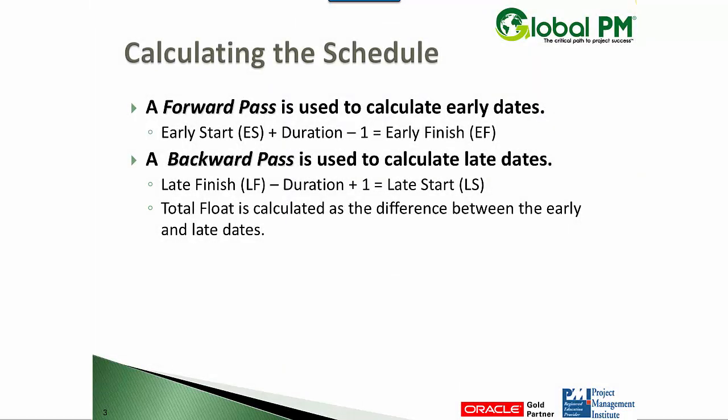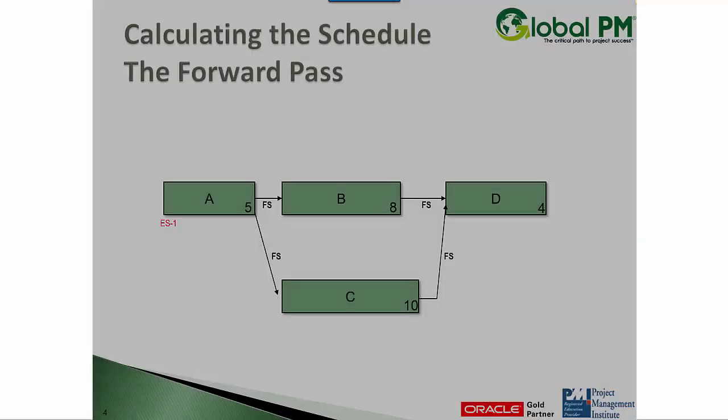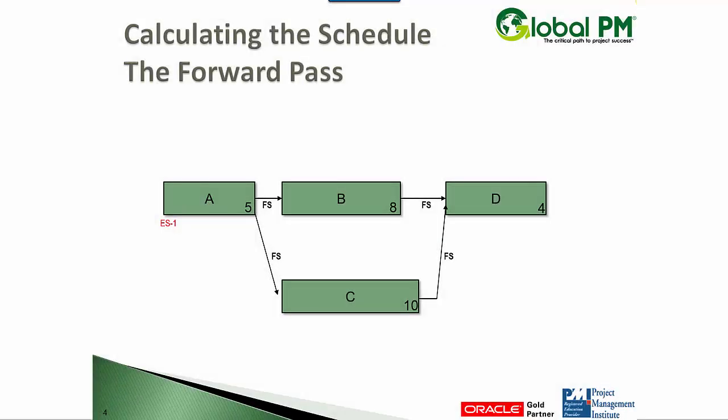In scheduling, we use a forward and backward pass to calculate early and late dates. Let me skip through this slide and show you a visual of what we have. Here's our network diagram. We have four activities, A through D. They're all linked together using finish to start relationships. We have activity A starting on day one.